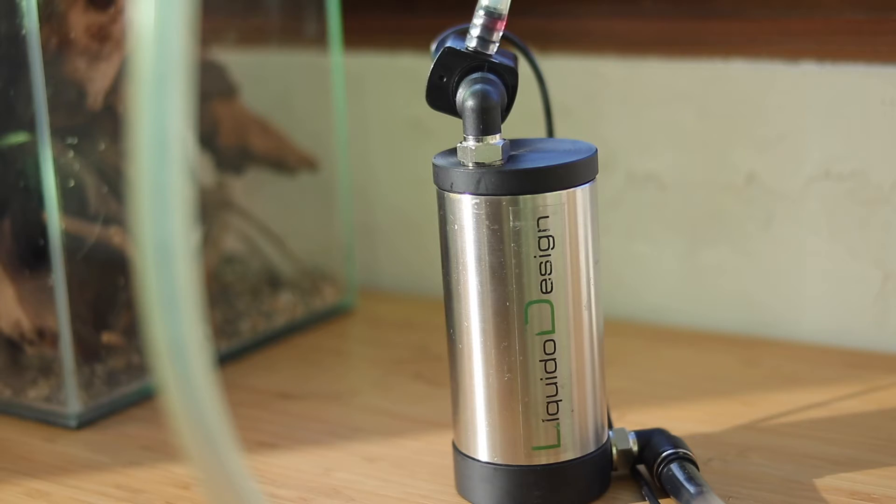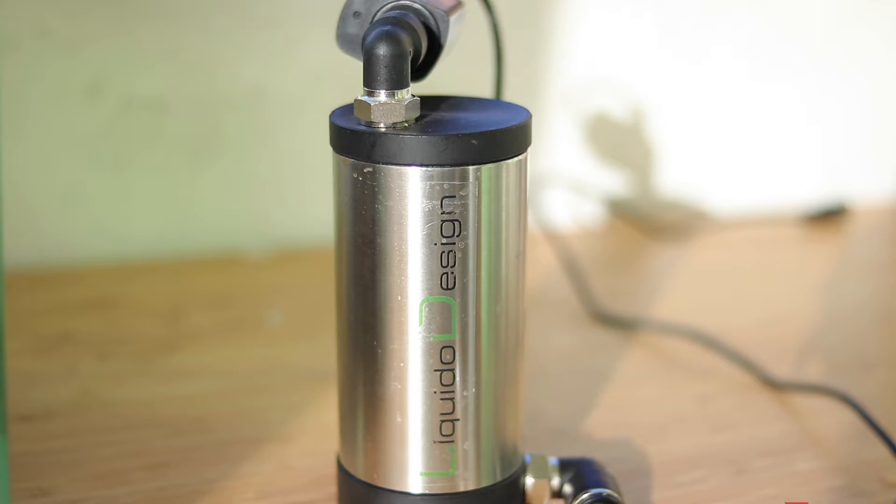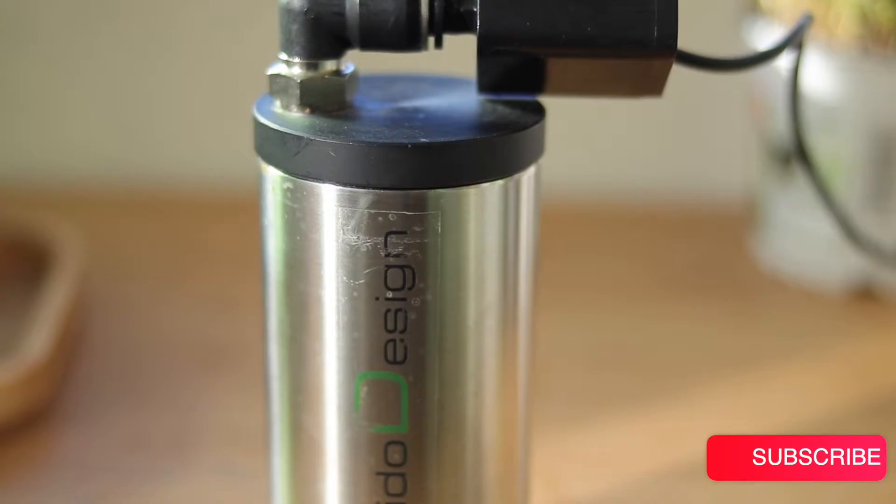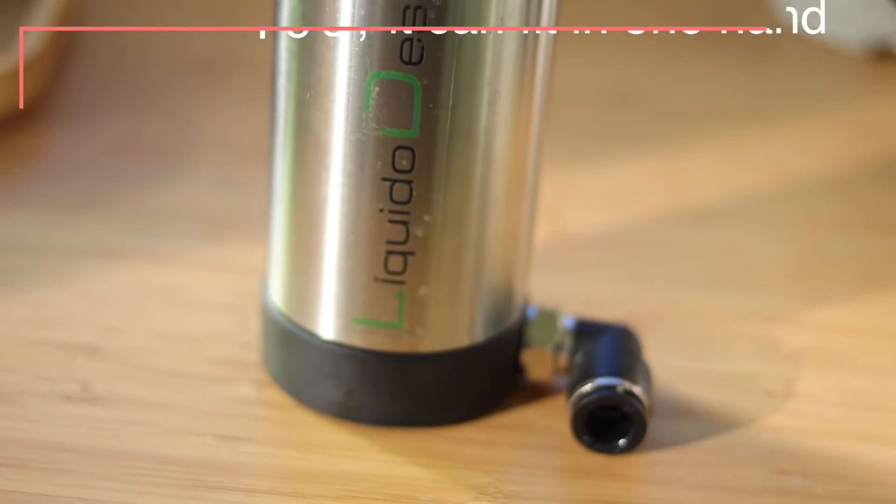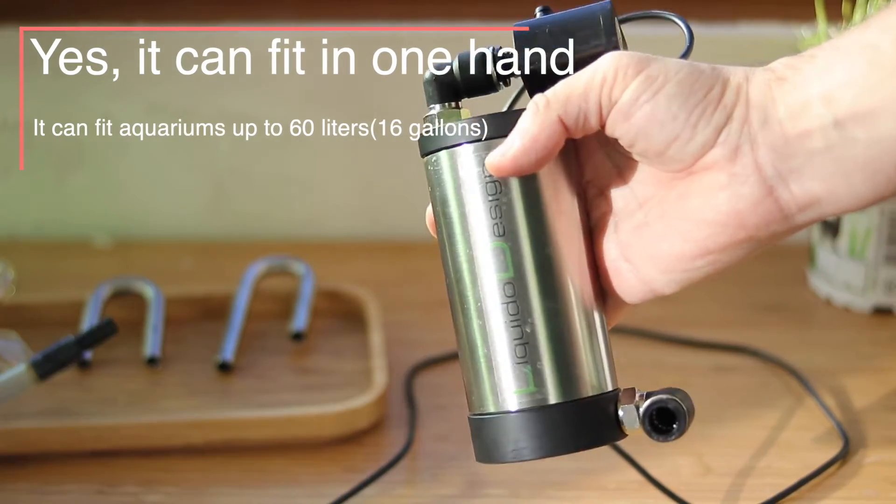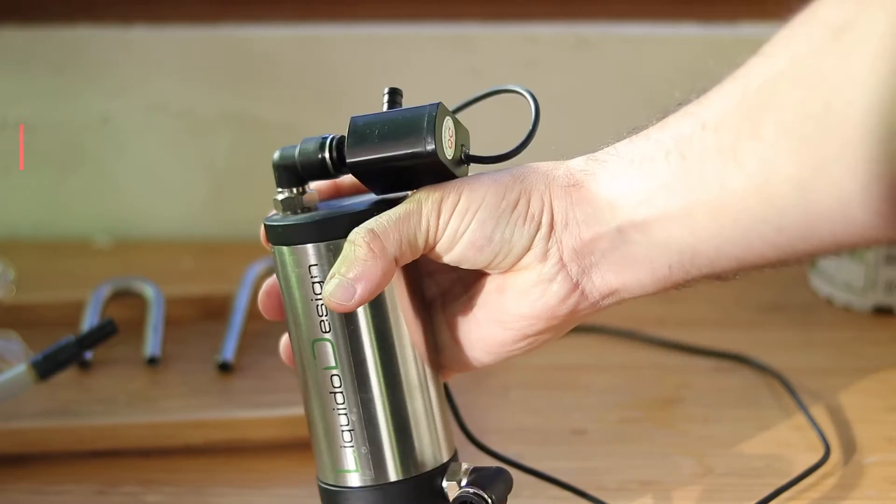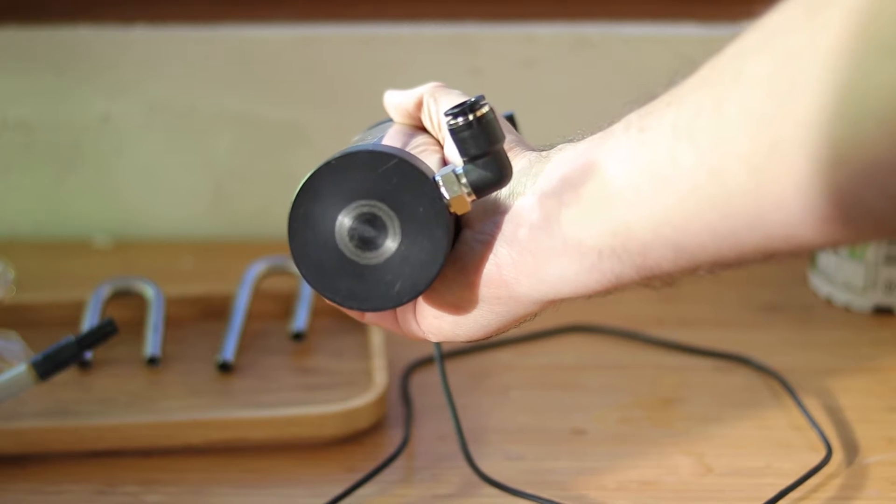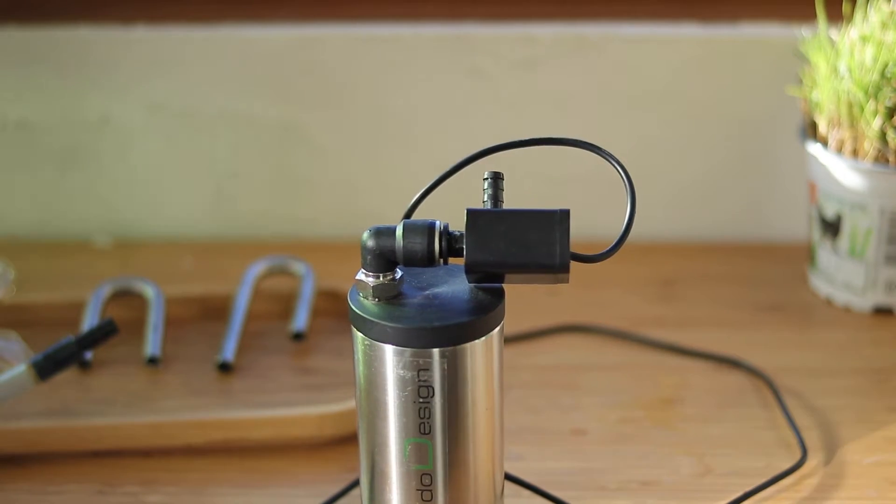The reason I decided to use the Liquido Design D100 is that some time ago I aquascaped a new tank, the ADA Mini M, which is around 25 liters. So I was looking for something powerful that can fit this heavily planted aquarium.